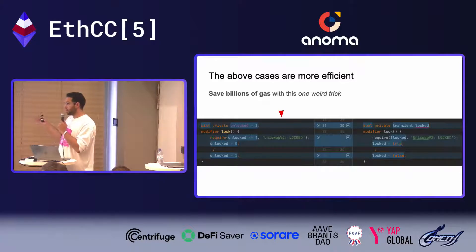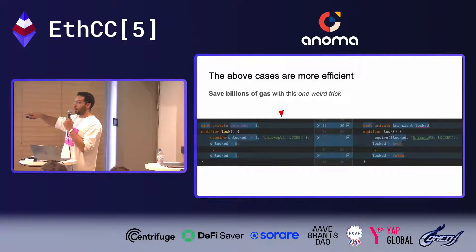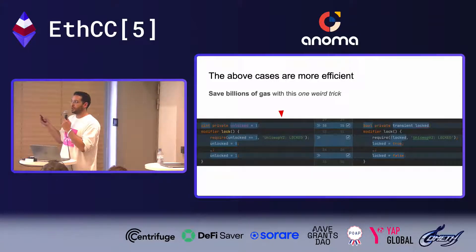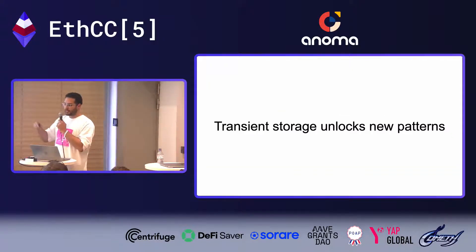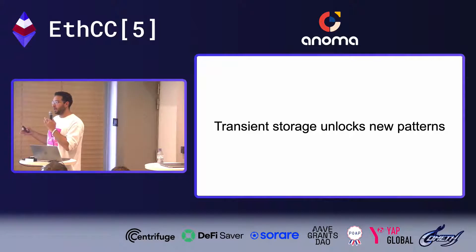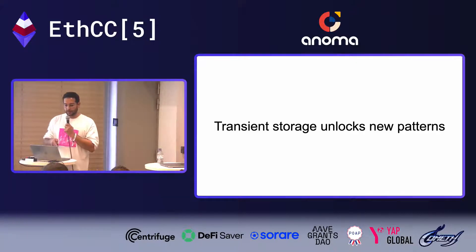You also don't have to deal with refunds or worry about whether you'll get the full refund based on total gas spent. In Uniswap v2 we actually did a trick: instead of zero-one-zero writes, we used one-zero-one writes because the refund was a little smaller — but the drawback is wasting 32 bytes on every pool for no reason, plus all those wasted reads. Transient storage doesn't just improve existing use cases — because it's so much cheaper and accessible, it enables new smart contract patterns entirely.